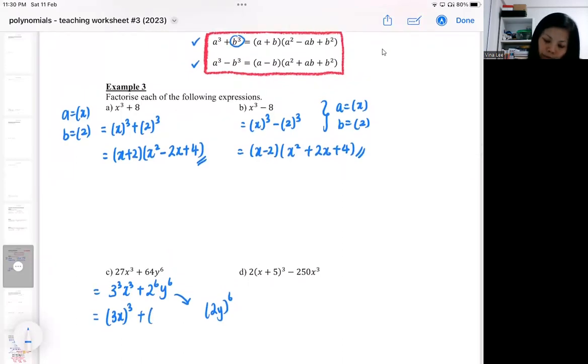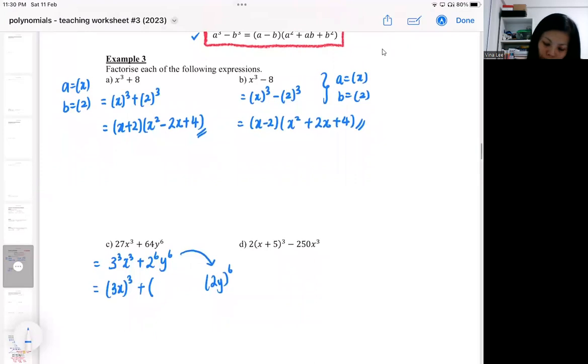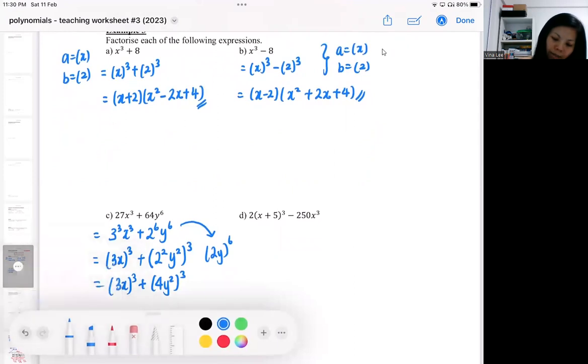I'm going to get the cube out, so I'll get 2² y². Look carefully - by right it should look like this, but the formula requires me to get a cube, so I am going to take the cube out. So this is my a - my a is 3x. My b is 4y².